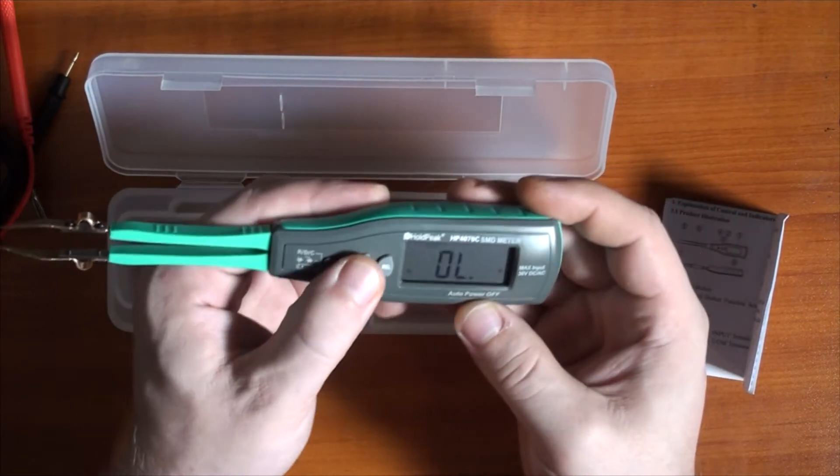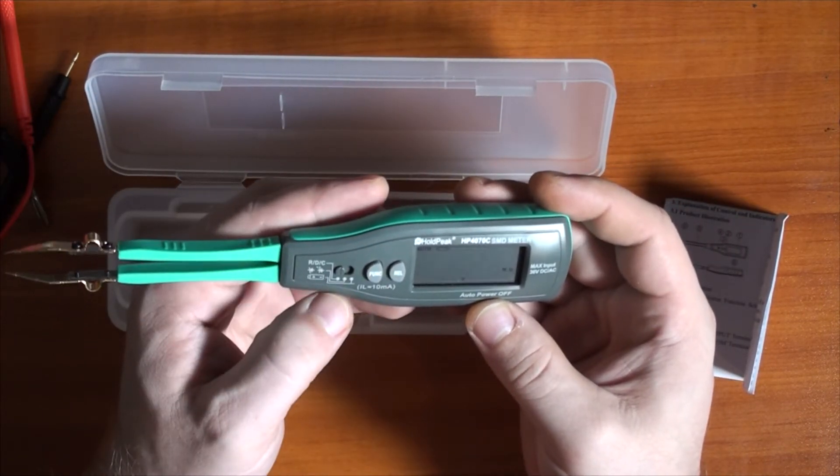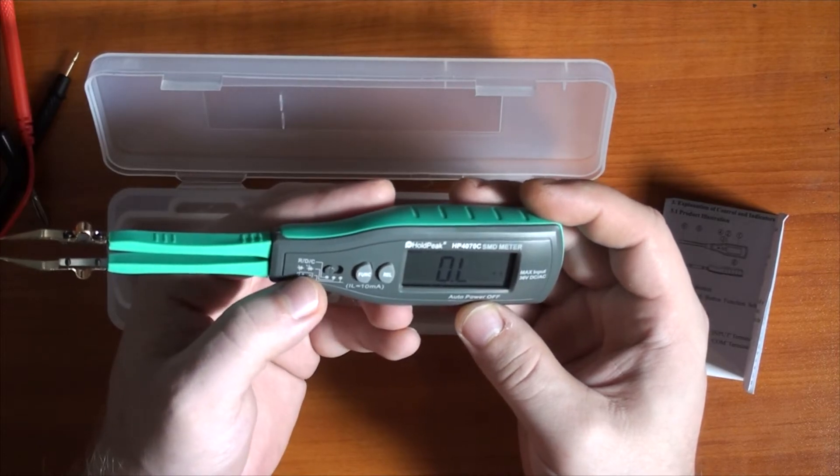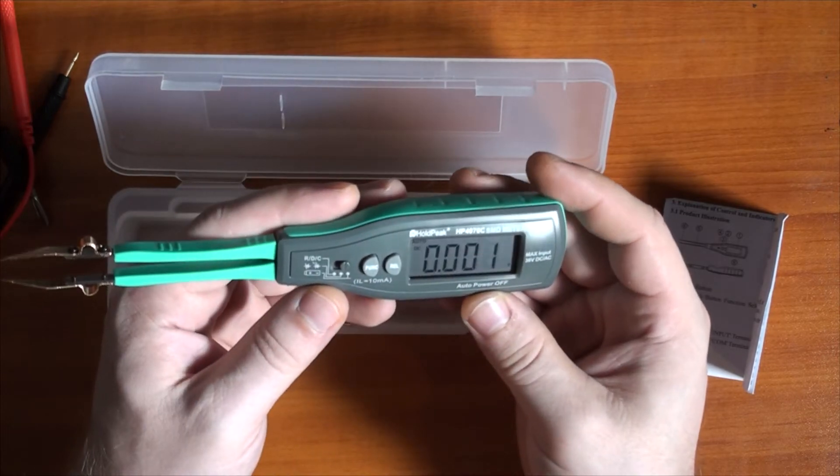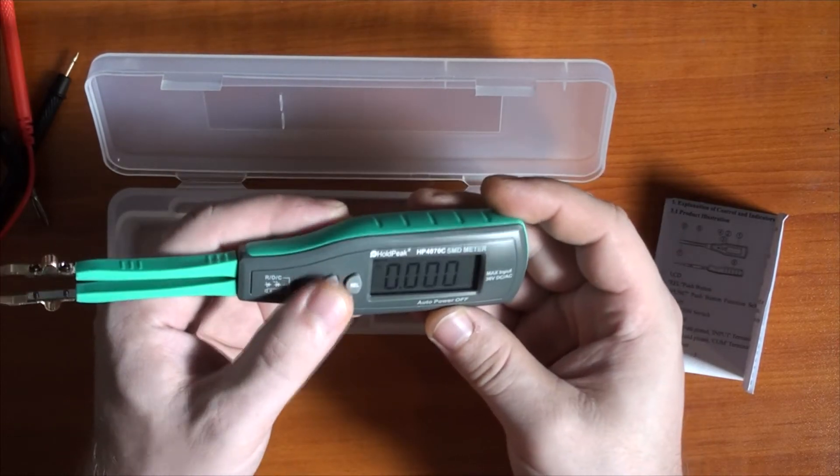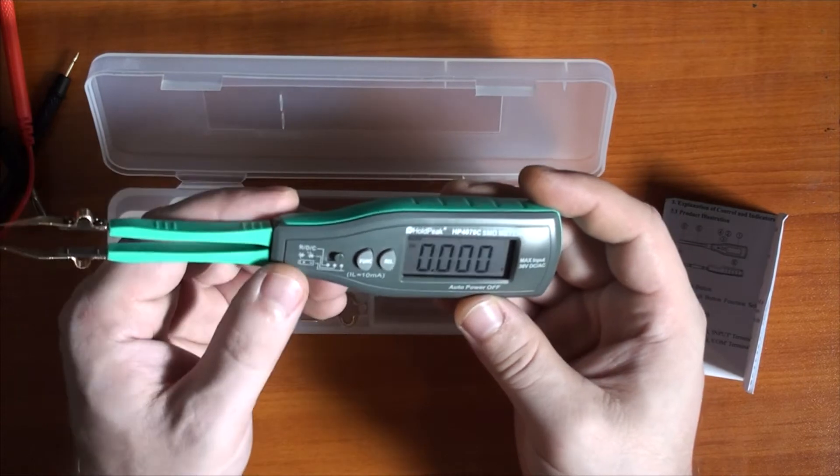The next one is the diodes and zeners which we'll get back to. Let's go to battery checking, and that just checks the DC. Doesn't measure AC, it does have relevance to zero things out.